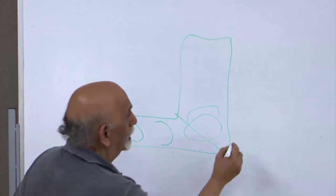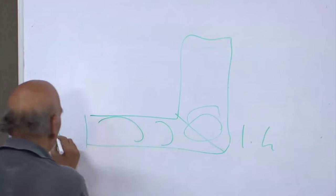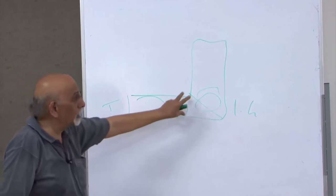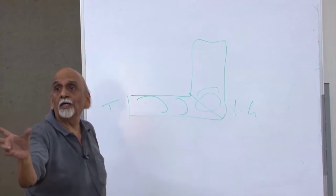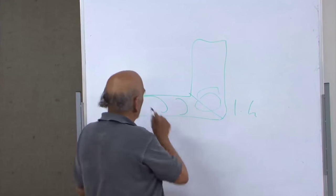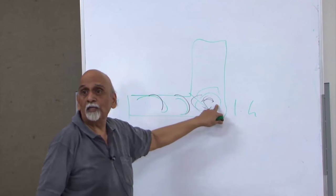This is almost like 1.4 mm, 4 times t. Suddenly there is a change in thickness, there will be a turbulence. So there is a possibility of void.